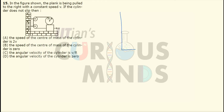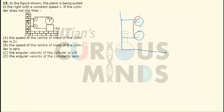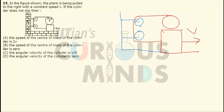First of all, let me draw this diagram again. For this diagram, there are two pulleys, and there is a string passing over the pulley connected to the top end, and there is a block at the bottom which is going in the right-hand side with the velocity V.